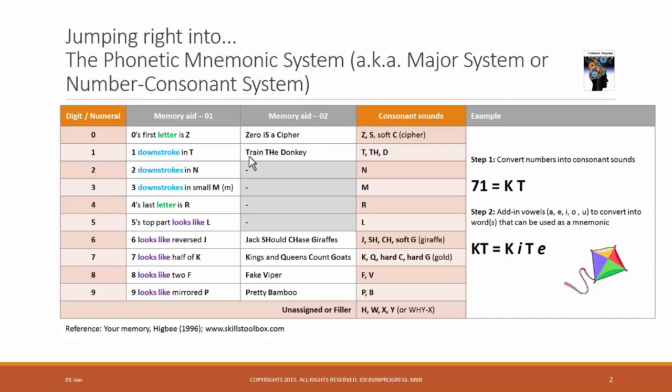Then for 1, we have train the donkey. So the other two consonant sounds are TH and D. For digit 6, we should remember the phrase Jack should chase giraffes. And then we get J, SH, CH and G.